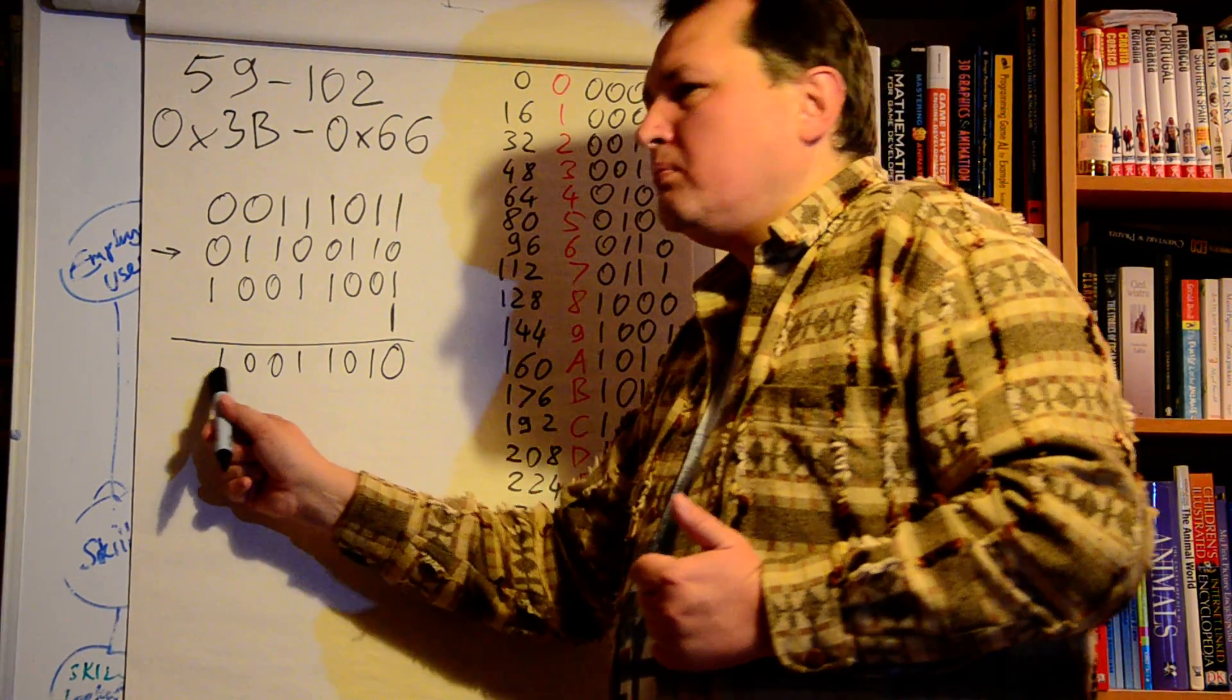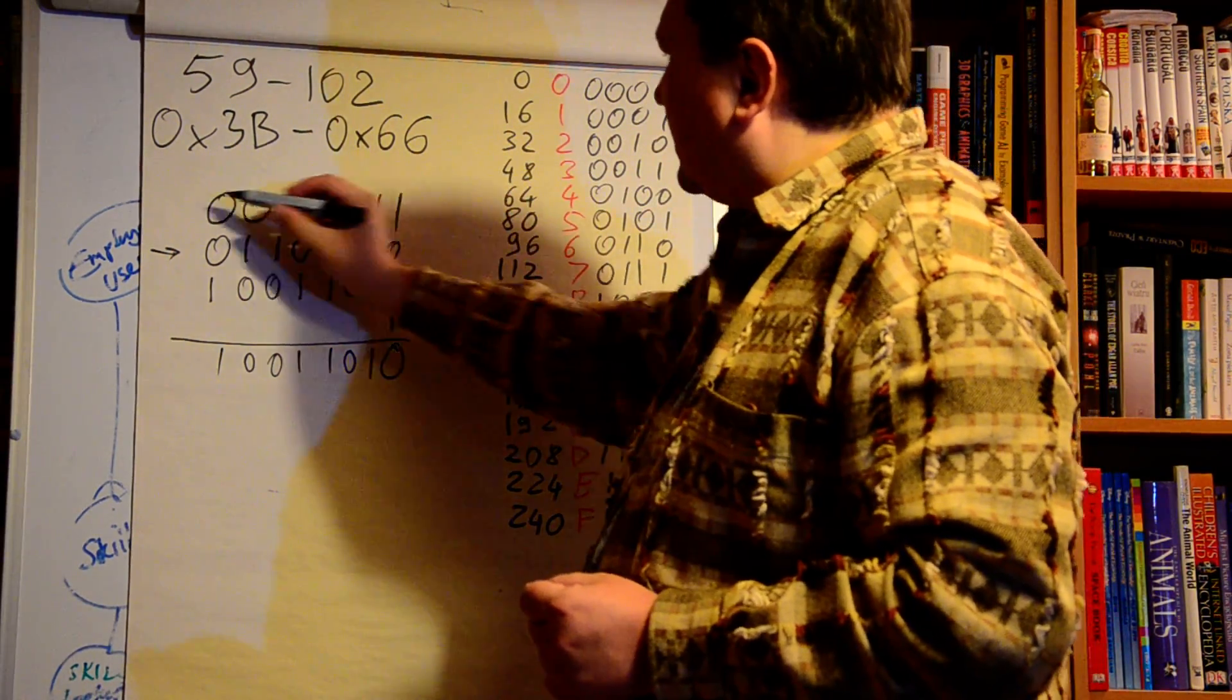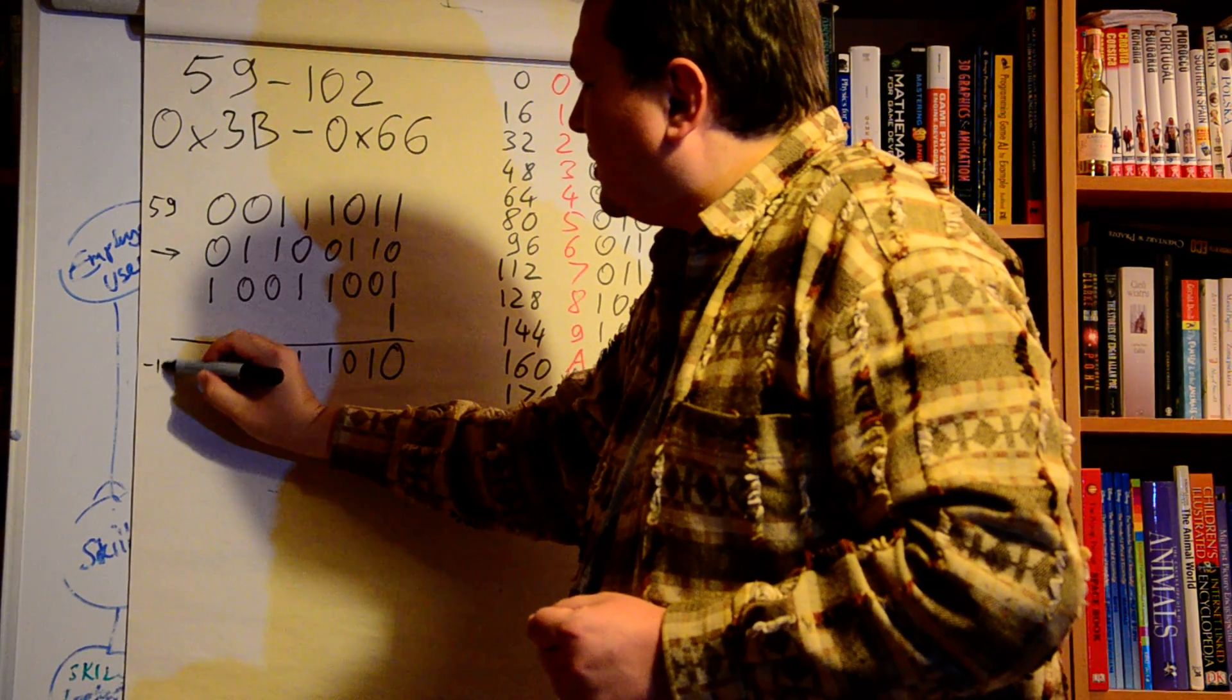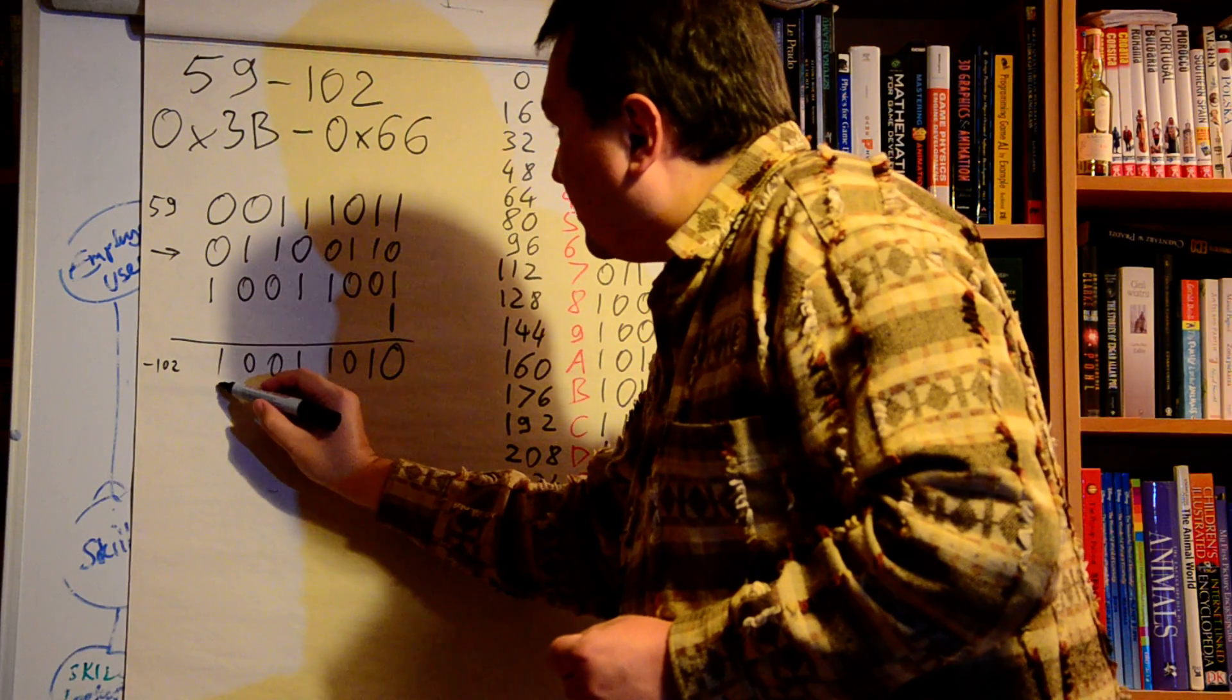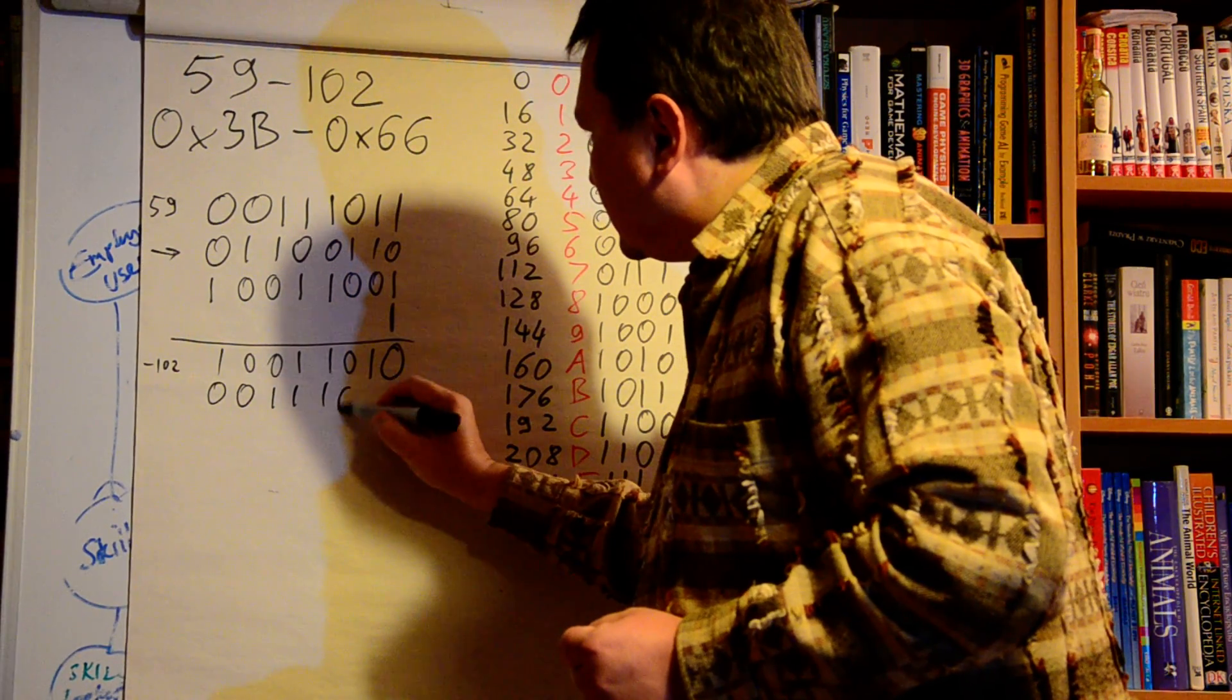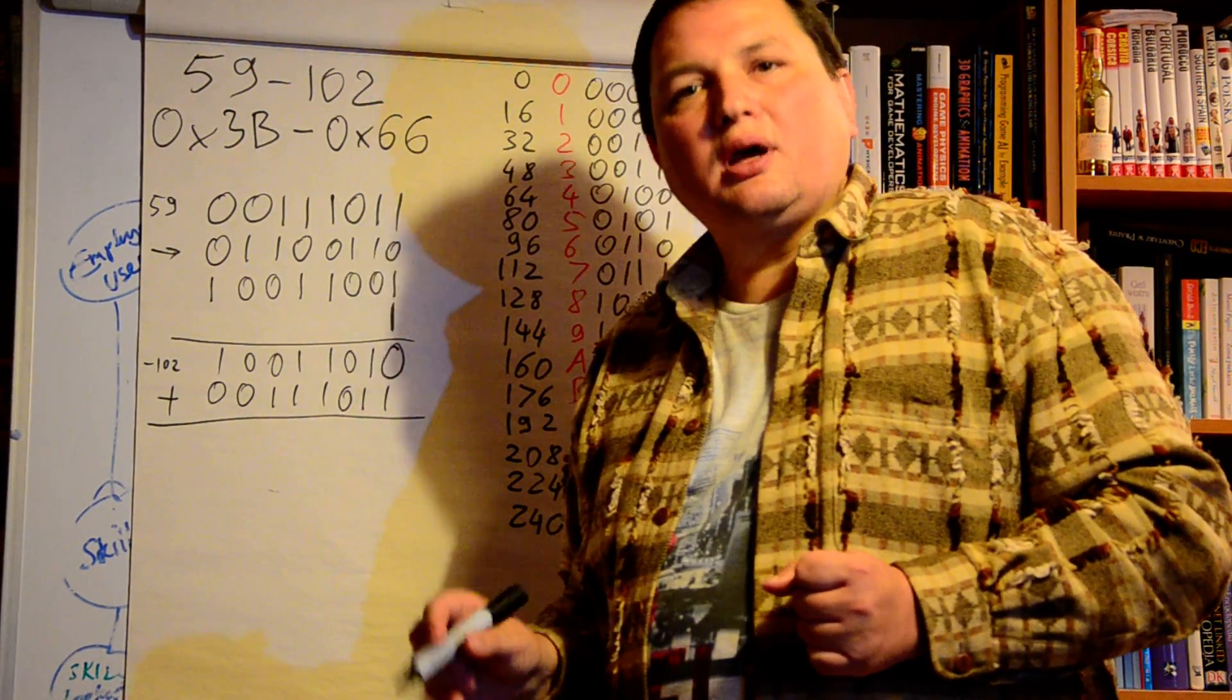To do the actual addition, I have to add this number, which is my 59, to minus 102. I can just copy this number right below this number: 00111011. And do the regular binary addition.